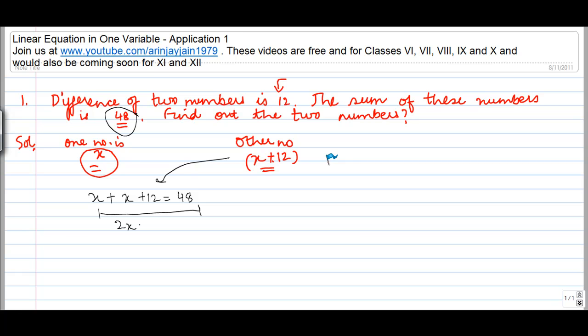So I get 2x, which is this plus this, plus 12 as it is, is equal to 48. Now I transpose 12 to the other side, so I get 2x is equal to 48, and because this has moved from the equality sign, the sign of this will change. So 48 minus 12 gives me 36.